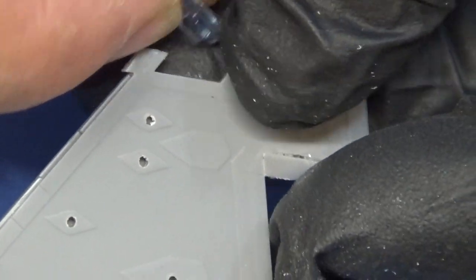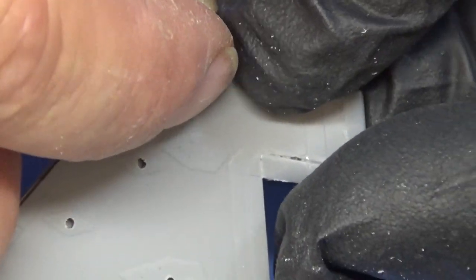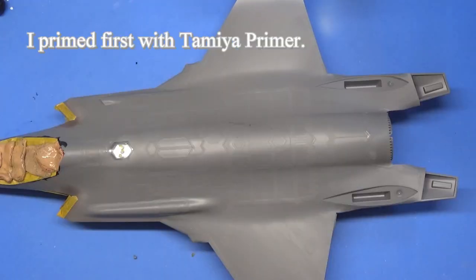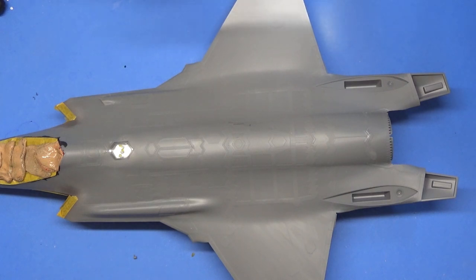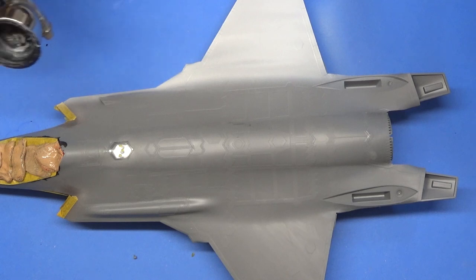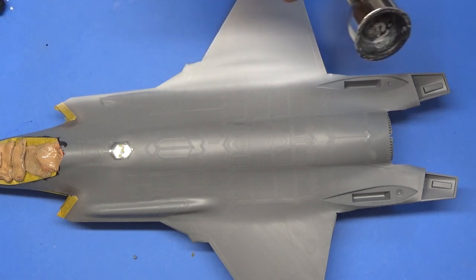These are the wing tips, by the way. So make sure you get those. We love to talk about the video as we're actually doing it. So start off with, I prime everything first. Got Tamiya white primer.